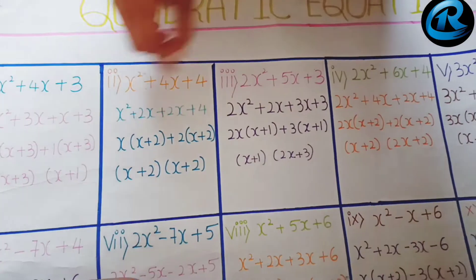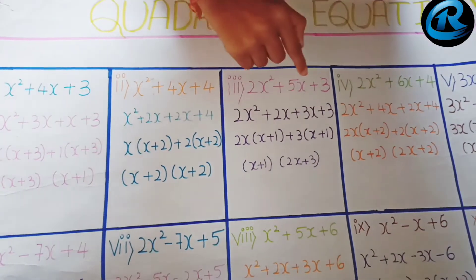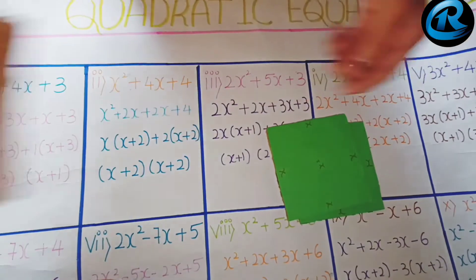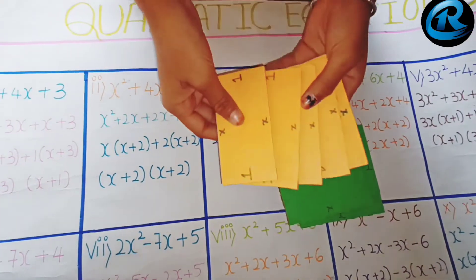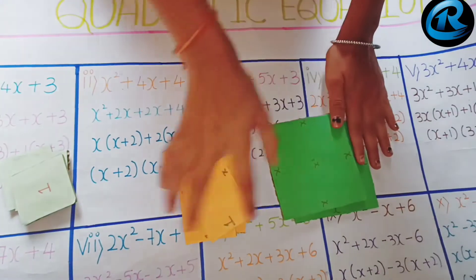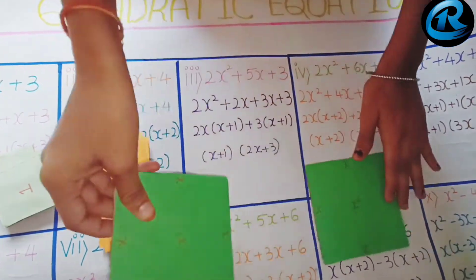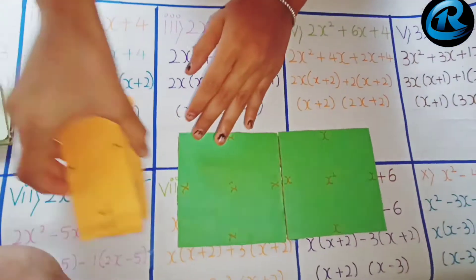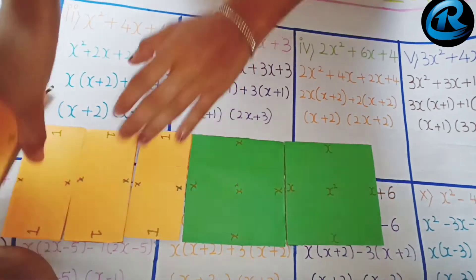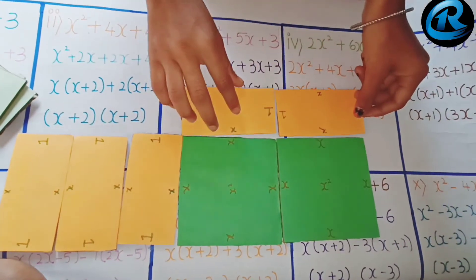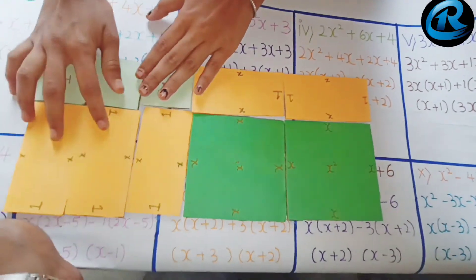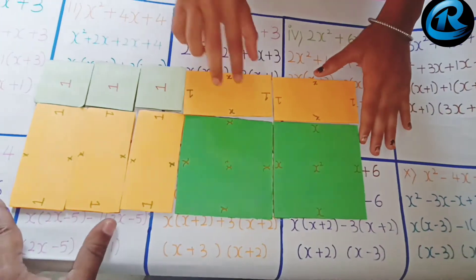Let us take one more example: 2x² + 5x + 3. We have to take 2 cards of x², 5 cards of x, and 3 cards of 1 unit. Let us form them into a perfect shape.